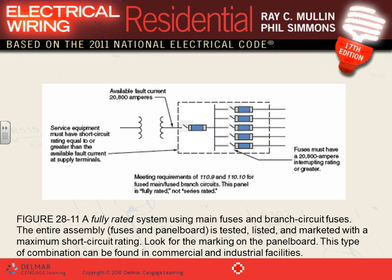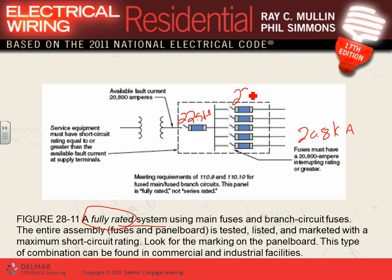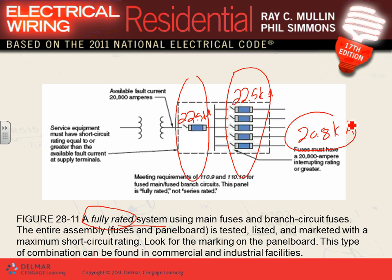Here's a fully rated panel. The available short circuit is 20,800 amps. Each one of these circuit breakers or fuses is rated for 22,500 amps. If the branch circuits and the main are both rated to handle the short circuit on the branch circuit side, this is a fully rated system. The problem with fully rated? Big dollars.